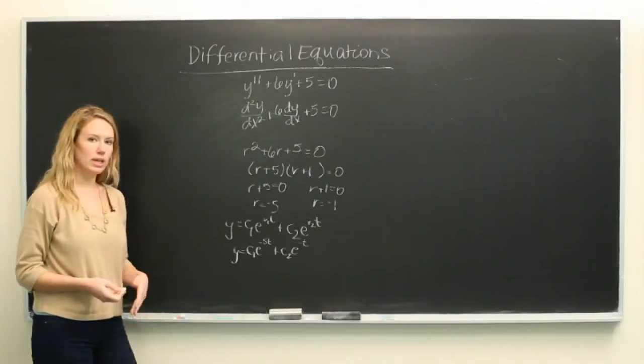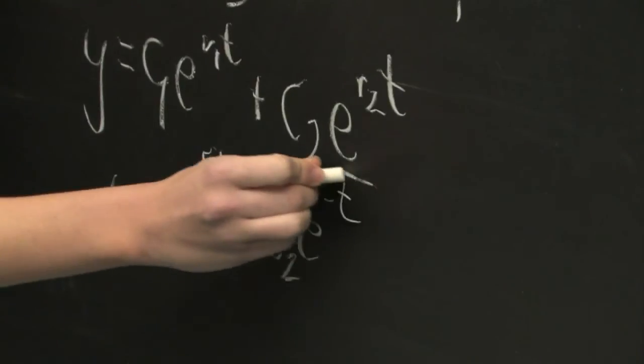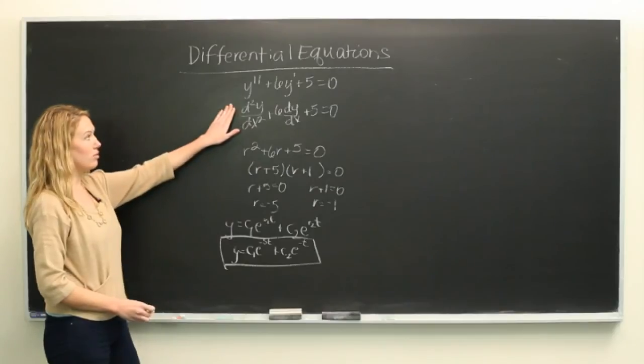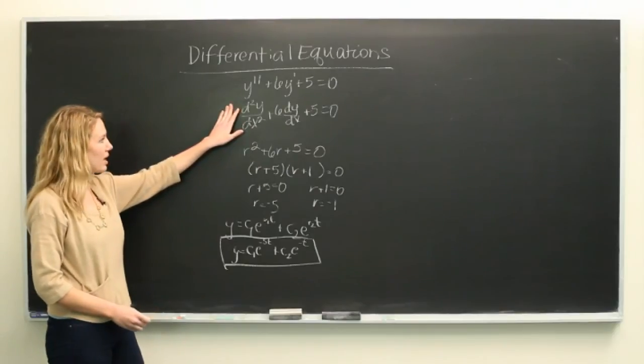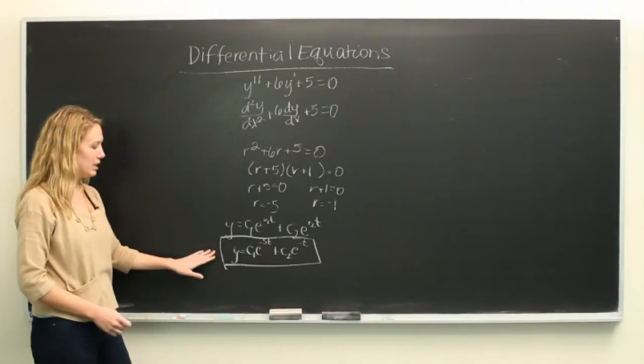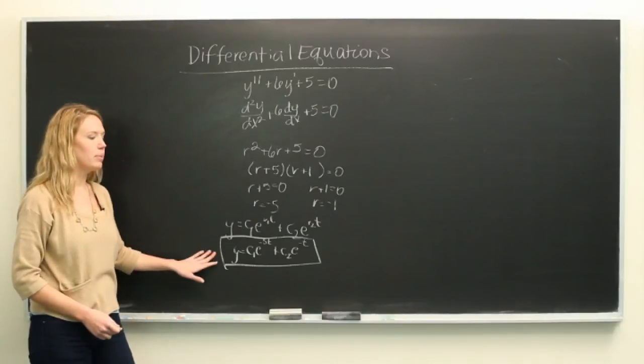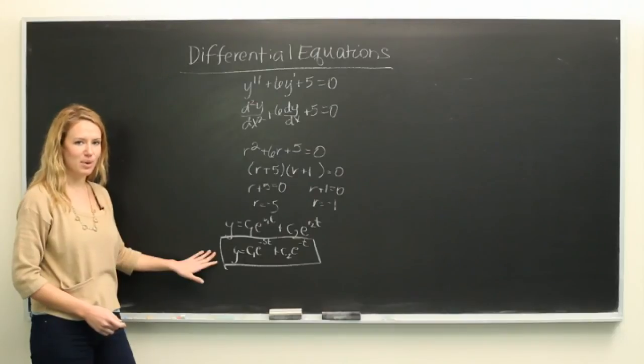So like I said we can leave our equation here and our answer to the differential equation y double prime plus 6y prime plus 5 equals 0 yields y is equal to c1e to the minus 5t plus c2e to the minus t.